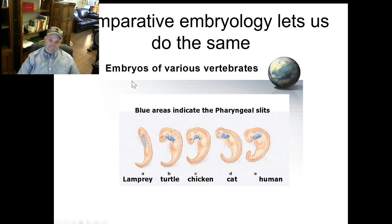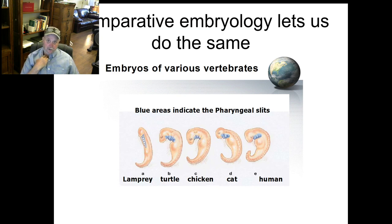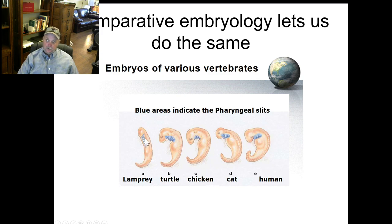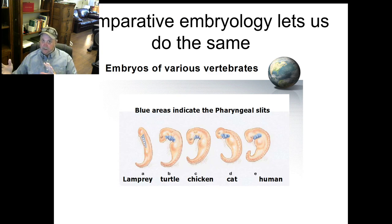Do you think you ever had gills? No? You did — you just don't remember it. While we're developing in the uterus, humans have a period where we have pharyngeal slits, which are gills. Most of your nutrition, oxygen, and waste products are exchanged through the placenta. It's basically a remnant of our past. We certainly don't need gills like a lamprey does, but we still have that remnant. When we talk about descent with modification, that's evidence of descent — by still keeping some traits and modifying them over time, it's good evidence that we all came from one ancestor.